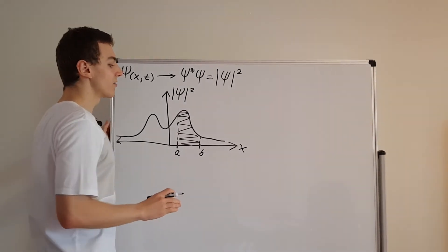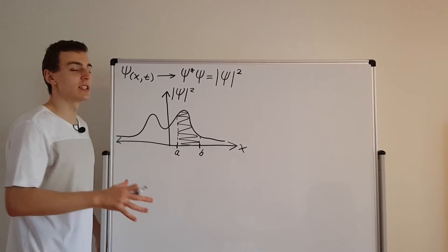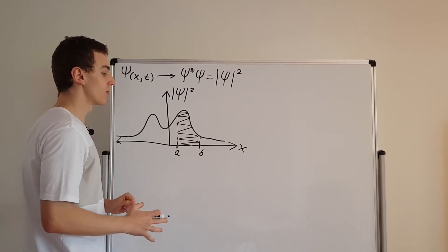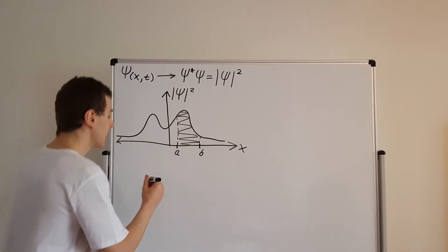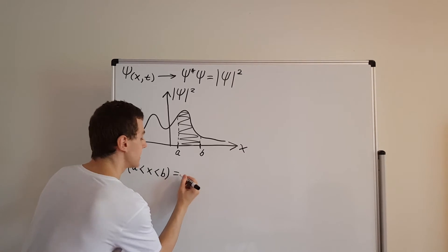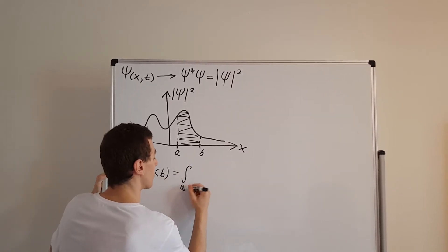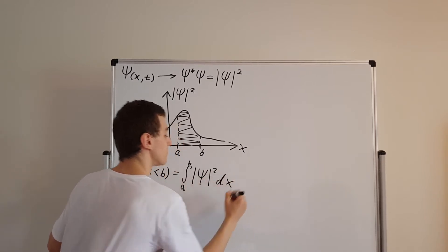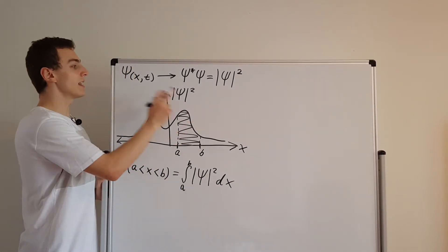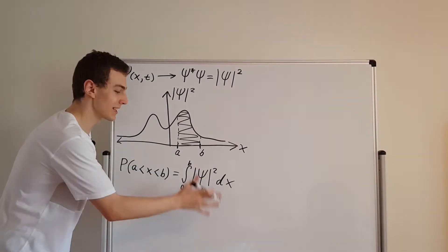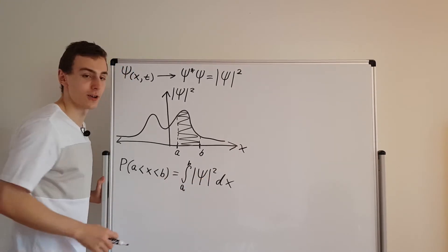So let's have a look at something that's very important, which is normalization. If we write this in terms of the probability, we can actually say that the probability of finding x or measuring x in between the values of a and b is equal to the integral from a to b of psi squared dx. Keep in mind that psi does have this dependence on x and t, but I've neglected to write that dependence for the sake of shorter notation and less clutter.